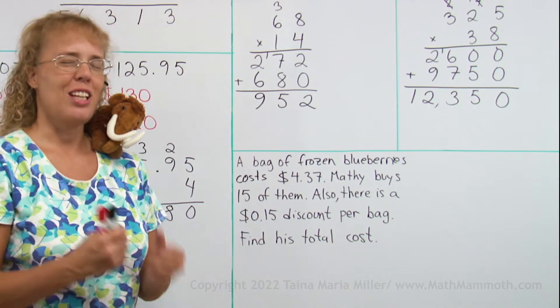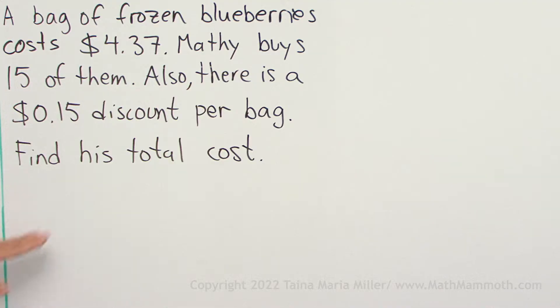Read that again, think about it, how do we solve it? Find his total cost, there's a discount, he buys 15 of them and that is the normal price.